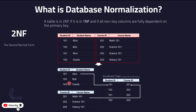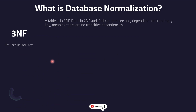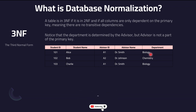The third rule is 3NF — Third Normal Form. A table is in 3NF if it follows 2NF and all columns are only dependent on the primary key, with no transitive dependencies. For example, consider a table with student ID, student name, advisor ID, advisor name, and department. The department has no primary key in this table and is not directly linked to the student's primary key.